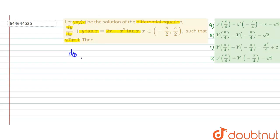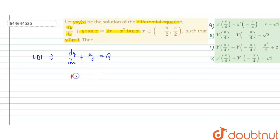This differential equation is of the type dy/dx + Py = Q, which is a linear differential equation (LDE). Here P and Q are functions of x. Comparing the equations, P = tan(x) and Q = 2x + x²·tan(x).